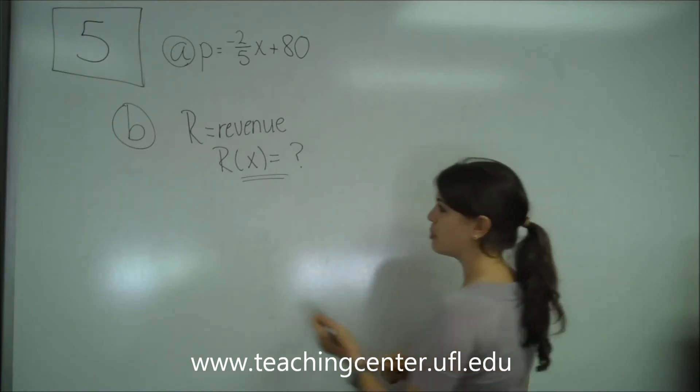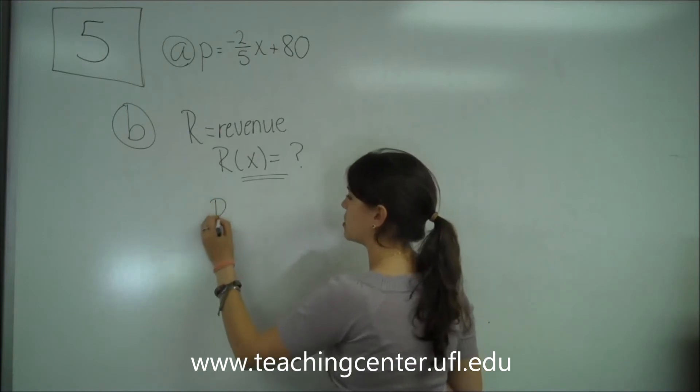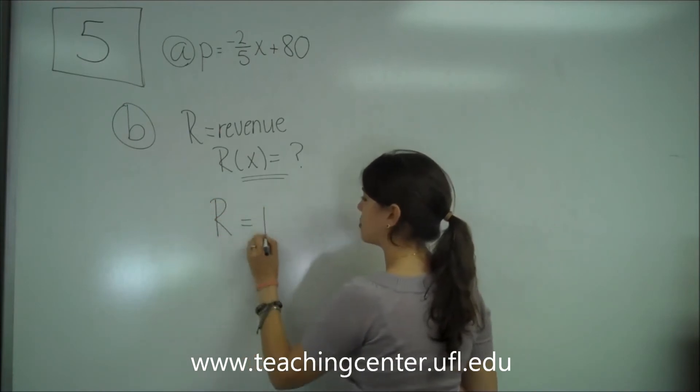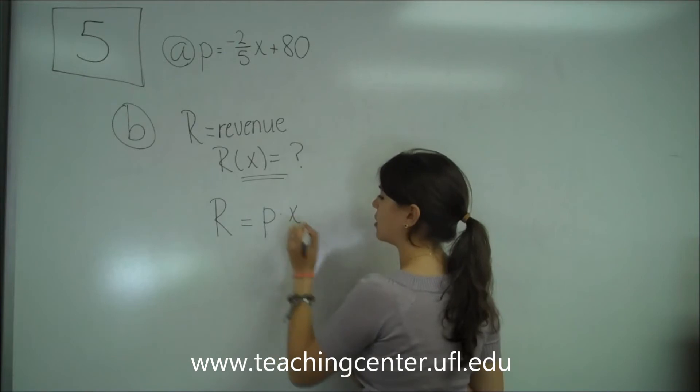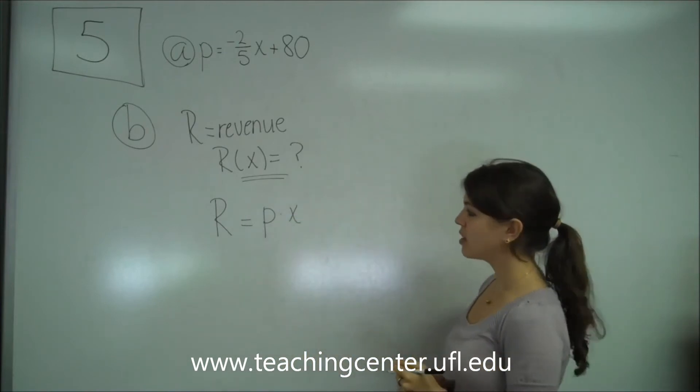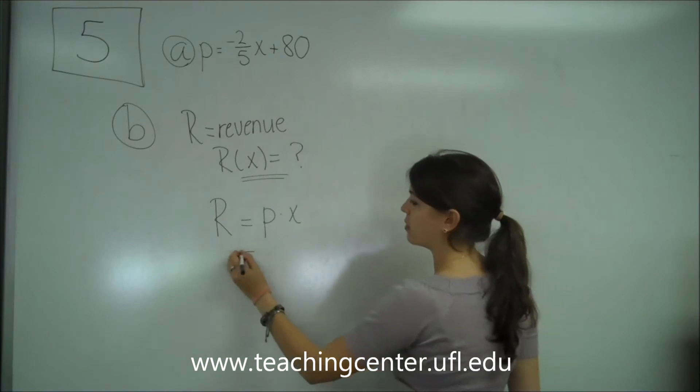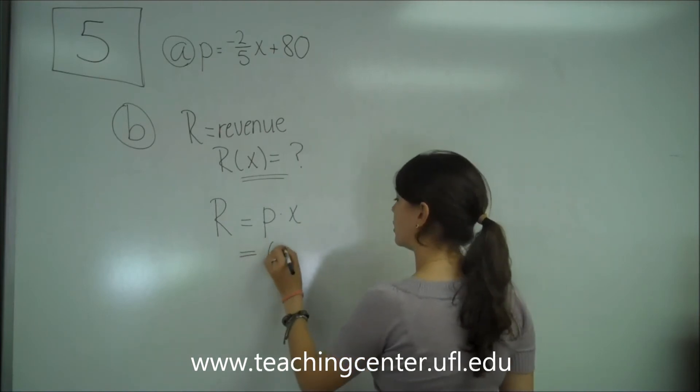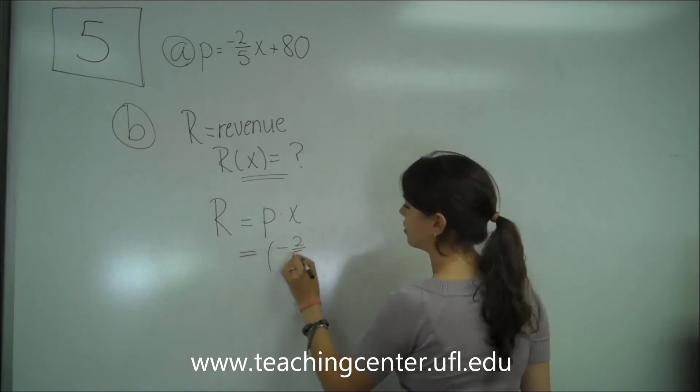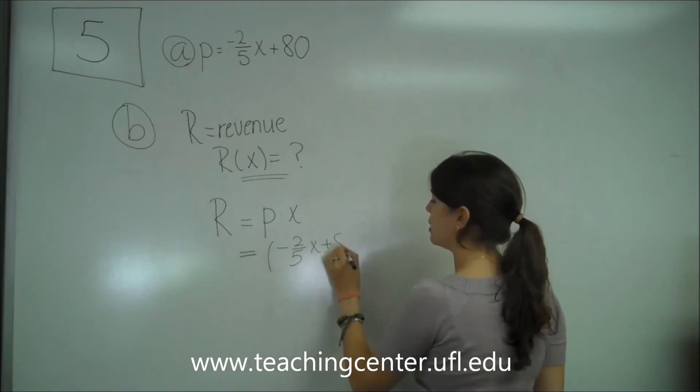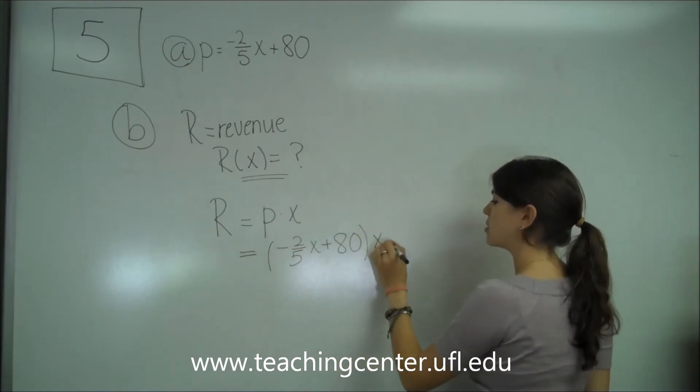So remember that in class it was said that R, the revenue, is the price times the number of units. In this case we already know the price because we solved for part A. So let's plug that in: negative 2 fifths X plus 80 times X.